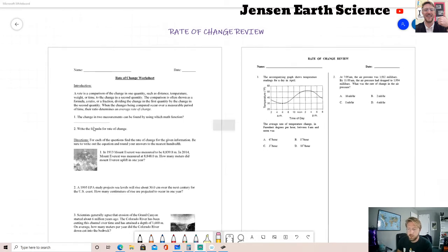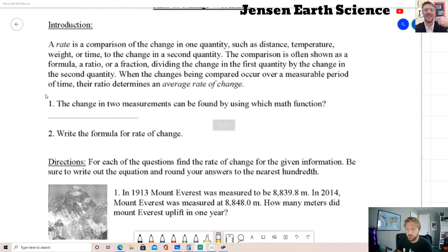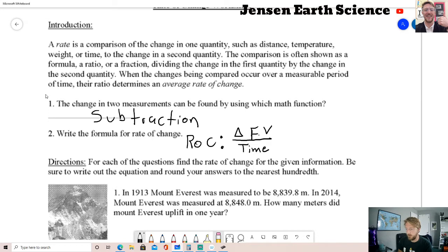Our first question from class says the change in two measurements can be found by using which math function. This math function would be subtraction. Then it wants us to write the formula for rate of change. I'm going to write ROC for rate of change, then I like to do a triangle for change, it's also known as a delta, and then F.V. for field value. So change in field value divided by time. Field value can be anything that you're measuring literally in the field. The idea is that scientists would be out in the field, whether it is a mountain or underwater or in space, it's whatever field they're in or field of science that they're in.